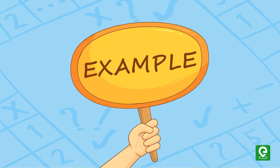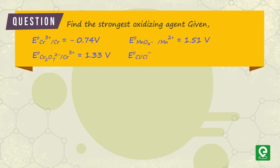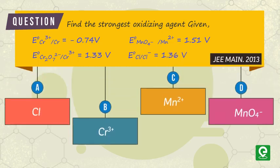Let's look at an example where we can apply this concept. Question: Find the strongest oxidizing agent given E° Cr³⁺/Cr = -0.74V, E° MnO₄⁻/Mn²⁺ = 1.51V, E° Cr₂O₇²⁻/Cr³⁺ = 1.33V, and E° Cl₂/Cl⁻ = 1.36V. The options are given.